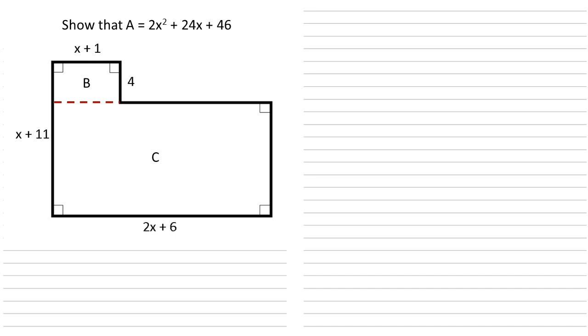Now the area of B is fairly simple. It's got a width of 4, it's got a length of x plus 1. So if we times them together we get an area of 4x plus 4.